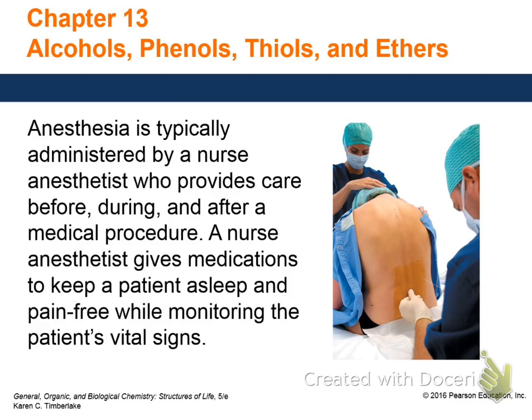We're going to talk about alcohols, phenols, thiols, and ethers. Don't freak out if you don't know what those are — we'll learn. I'm assuming you've already learned about alkanes, alkenes, and alkynes. Alkanes have C and H, alkenes have a double bond, and alkynes have a triple bond. You should have also learned how to name them using the -ene and -yne suffixes.